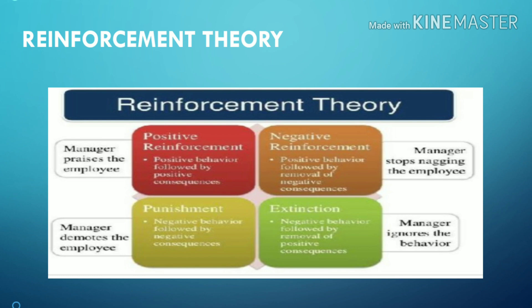Next is Skinner's Reinforcement Theory, based on B.F. Skinner's Operant Conditioning Theory — that behavior is formed by its consequences. First: positive reinforcement — praise, appreciation, money, and promotion increase the possibility of rewarded behavior being repeated. Next is negative reinforcement — positive behavior followed by removal of negative consequences, such as managers stopping nagging employees. Third: punishment reinforcement — negative behavior followed by negative consequences, such as a manager demoting an employee. The last is extinction reinforcement — the absence of reinforcement, which lowers the probability of undesired behavior by removing the reward for that behavior.